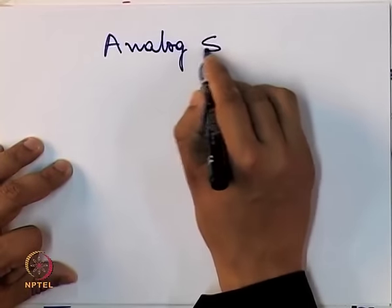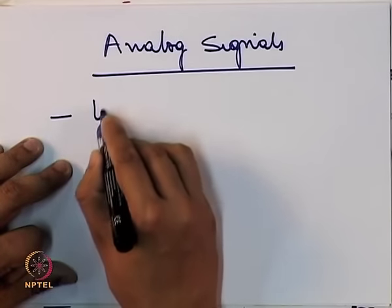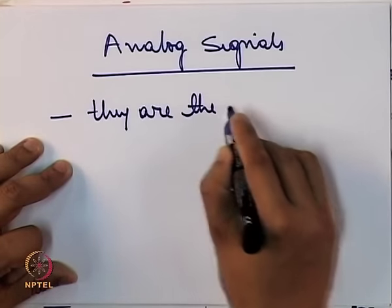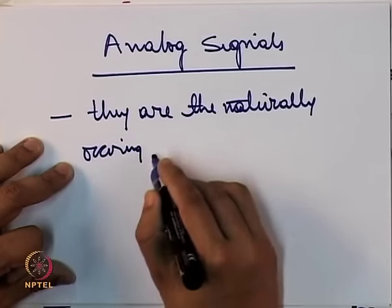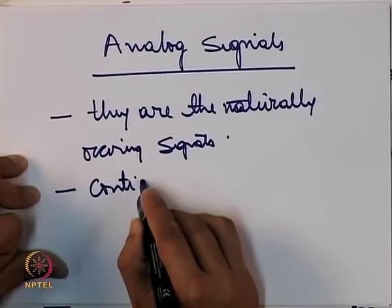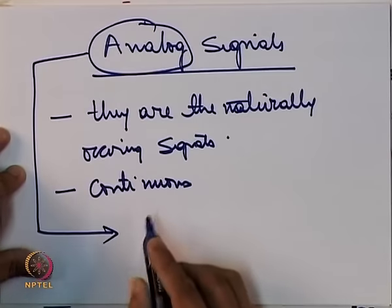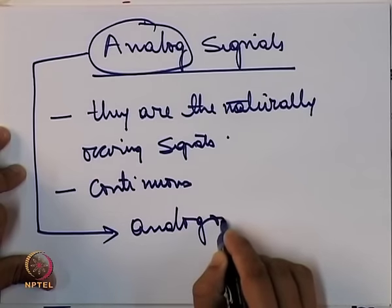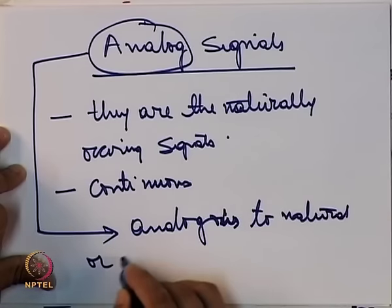For example, voice, music, images, energy, and power — all these signals are analog in the sense that they are continuous. If I plot the signal s(t) with the x-axis representing time, these signals are continuous with no break between them, and this is what happens in nature. Analog signals are the naturally occurring signals.